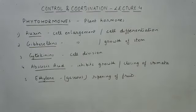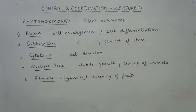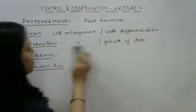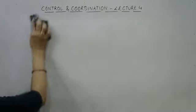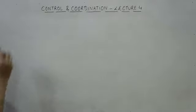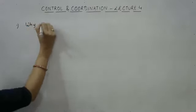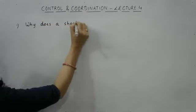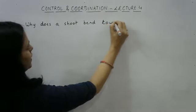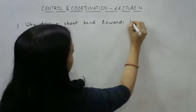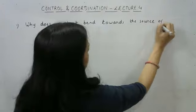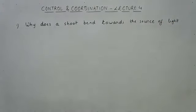So these five hormones — auxin, gibberellins, cytokinins, abscisic acid, and ethylene — are part of your syllabus and you need to know their functions properly. Now moving on to the next topic — two very important exam questions based on hormones and tropisms. The first question is: why does a shoot bend towards the source of light? You have to explain the exact mechanism of how it happens.